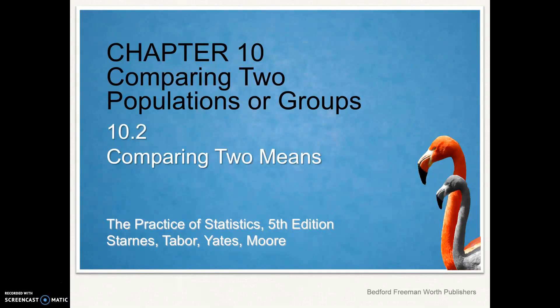Continuing with chapter 10 on comparing two populations or groups. In section 10.2, as opposed to 10.1, in 10.1 we looked at comparing two proportions. In 10.2 we're looking at comparing two means.